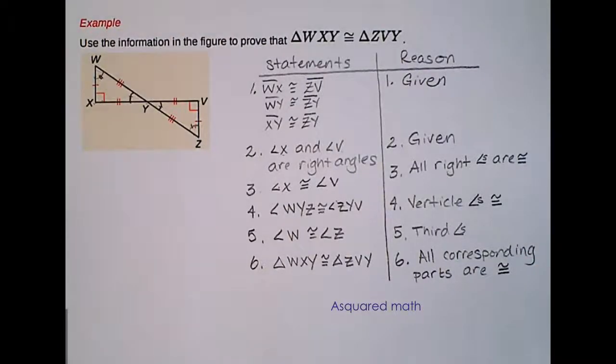That completes the lesson on section 5.2, congruent polygons, where you learned about identifying corresponding angles and corresponding sides. You learned about your congruent statements, and then we worked on proof applying some of the properties of our triangles that include the reflexive, symmetric, and transitive properties. Thanks for listening, and I will talk to you in the next lesson.